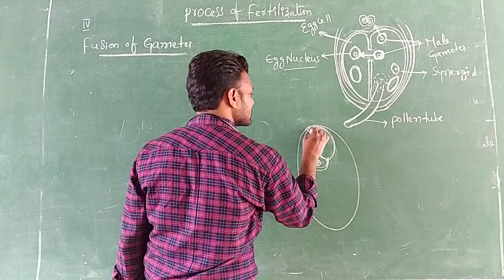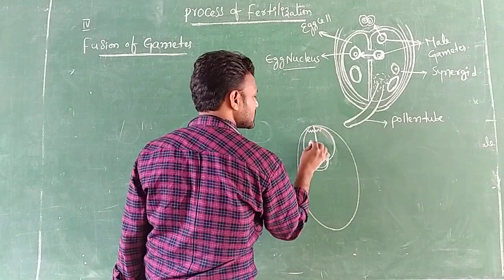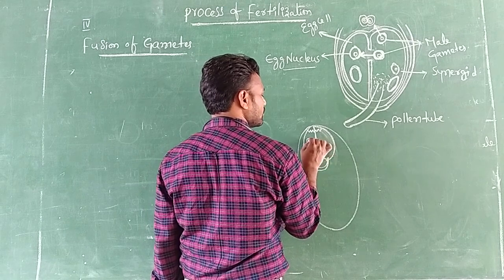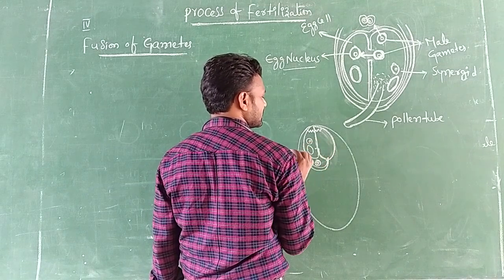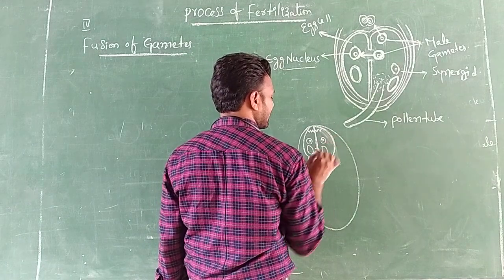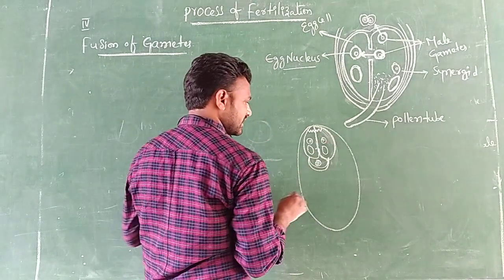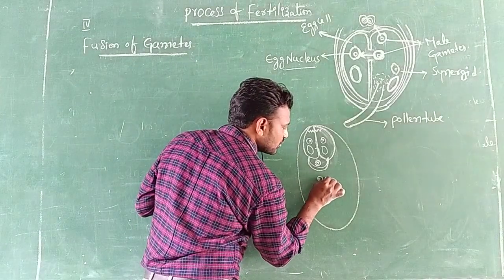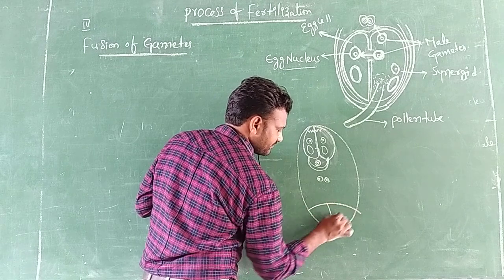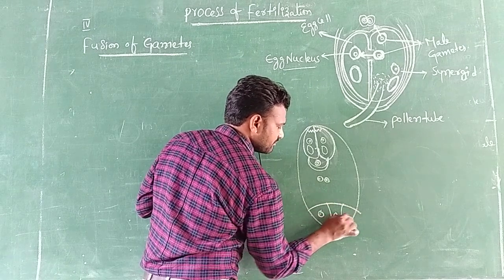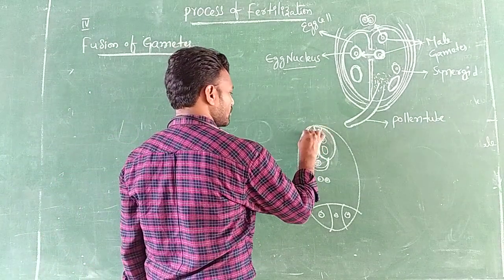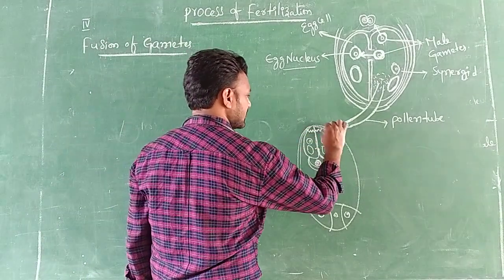In the embryo sac: these two are the synergids. In the synergid there is a vacuole and a nucleus. These two are the polar nuclei. And here you can observe the antipodals.